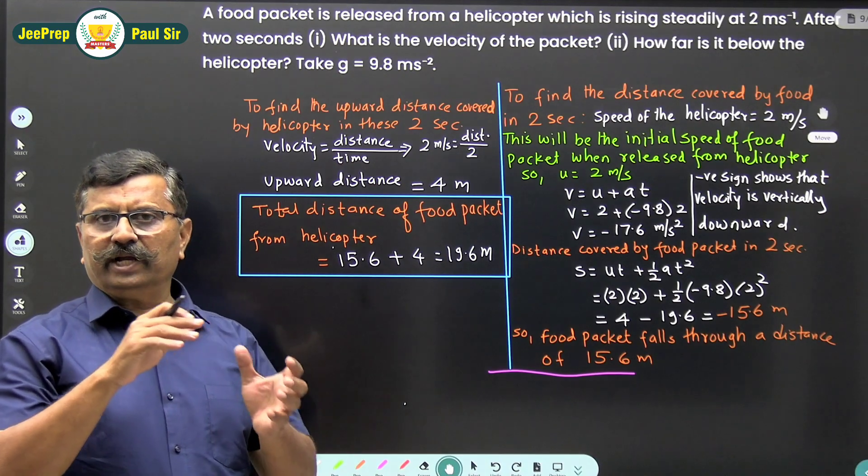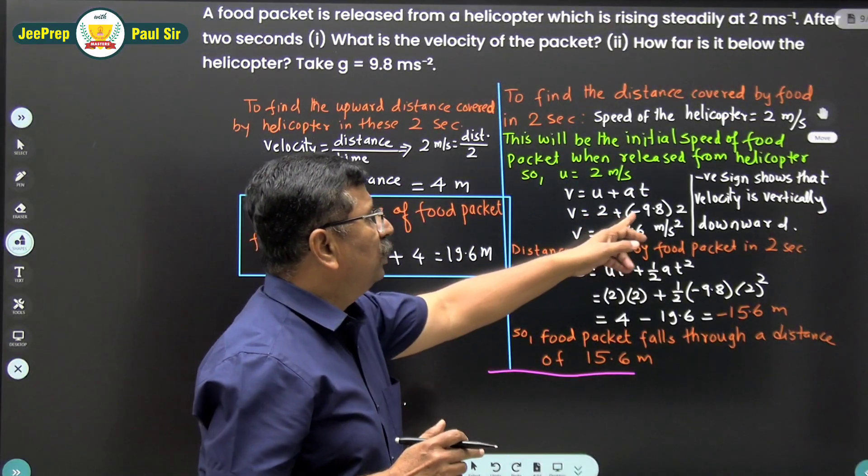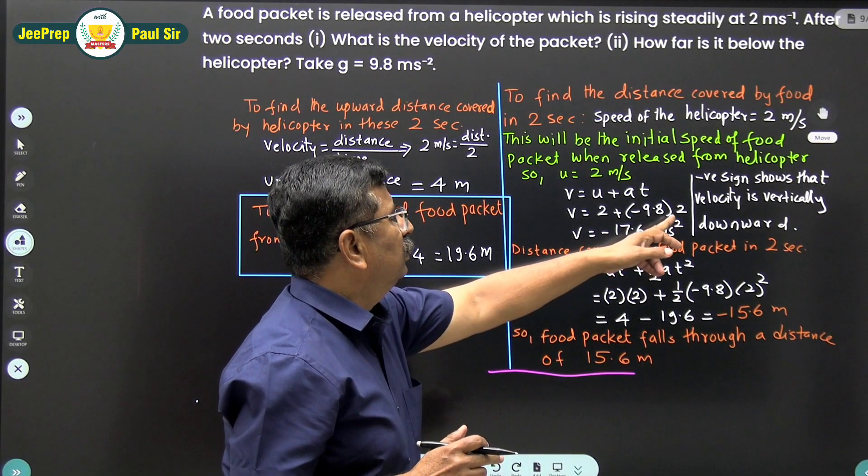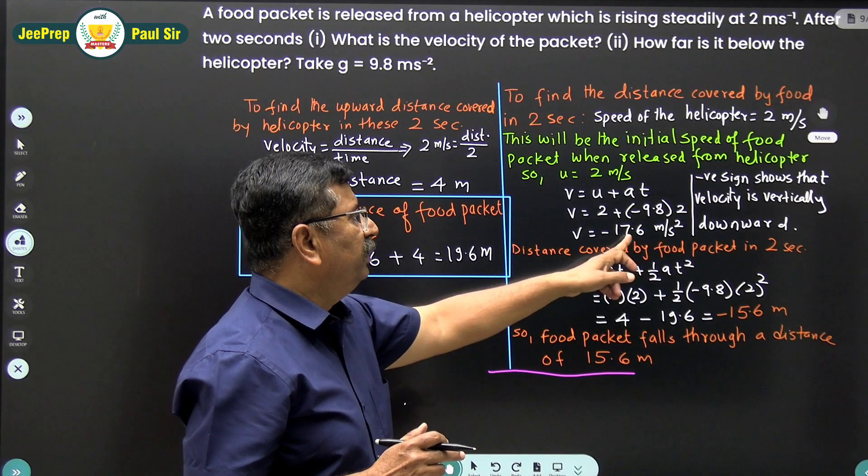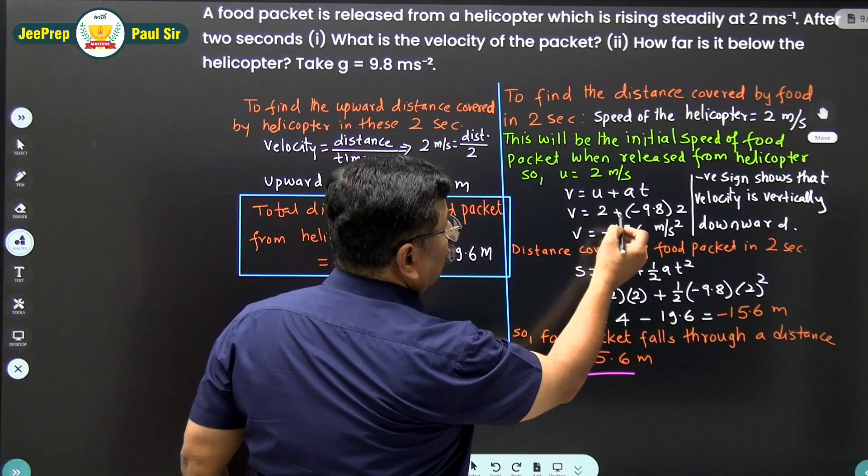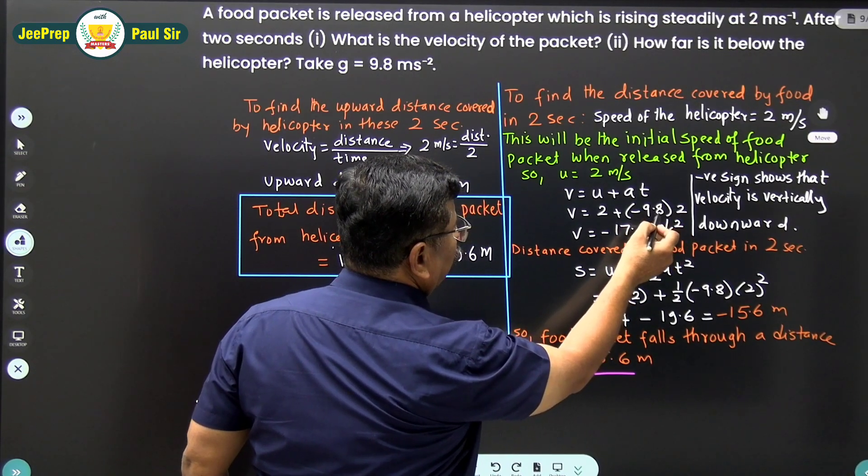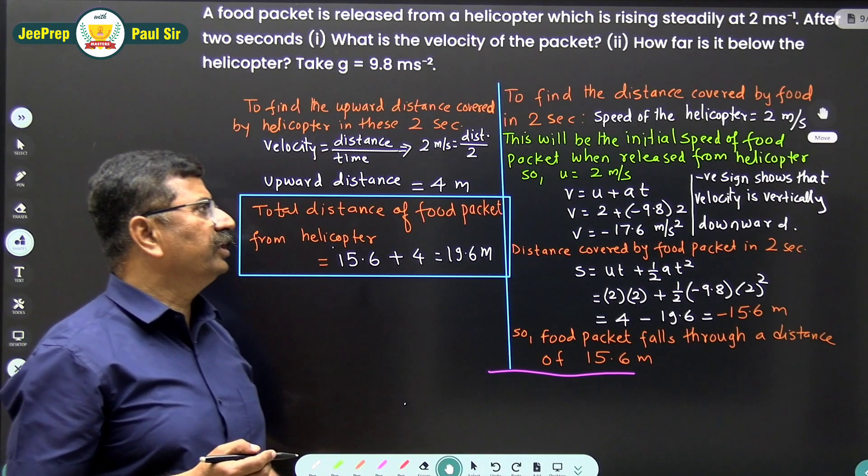Now the food packet starts falling down, and v = u + at = 2 + (-9.8)(2). Therefore, v = 2 - 19.6 = -17.6 m/s.